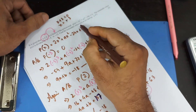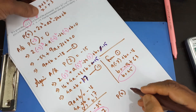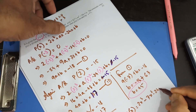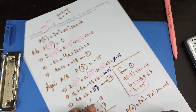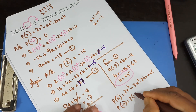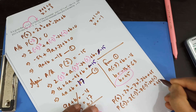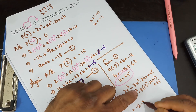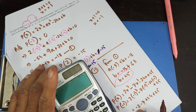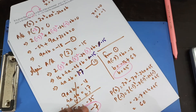Find the remainder when P(x) is divided by x + 1. With A = −7 and b = 45, P(x) = 2x³ − 7x² − 24x + 45. Substituting x = −1: 2(−1) − 7(1) + 24 + 45 = −2 − 7 + 24 + 45 = 60. The remainder is 60.